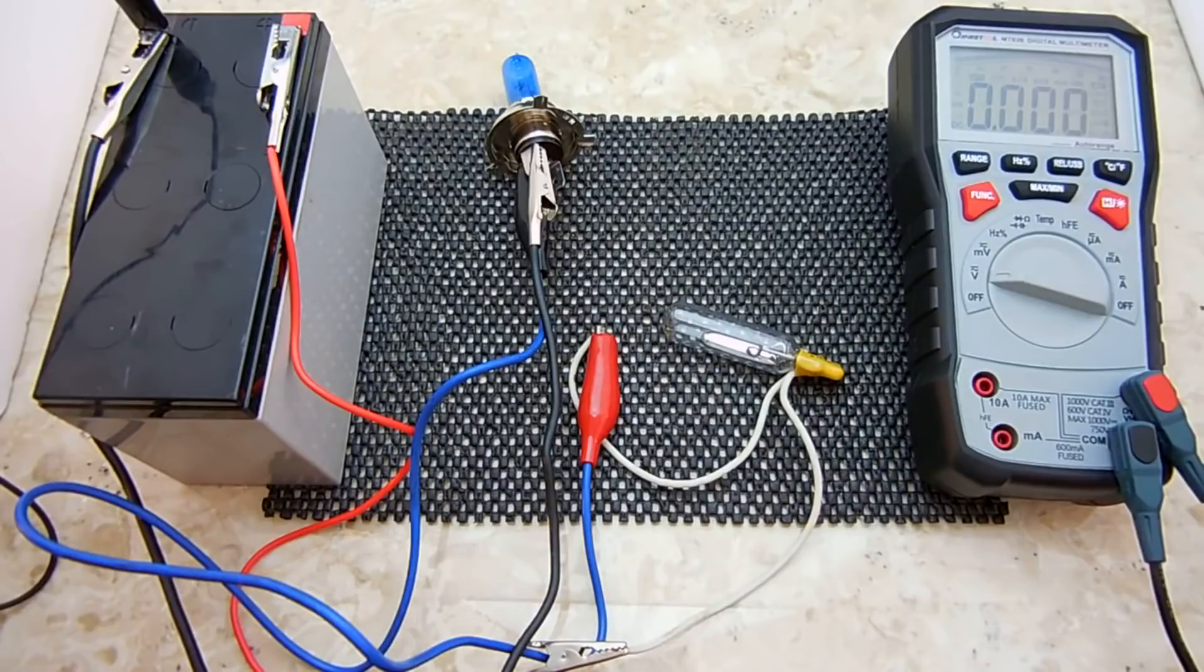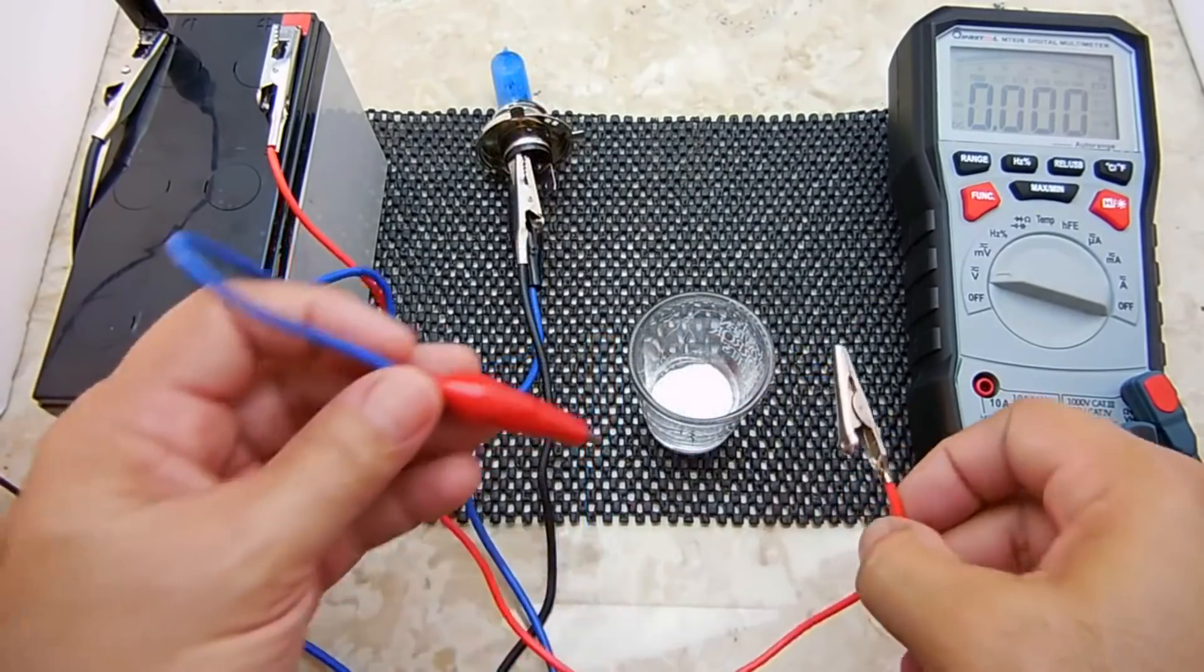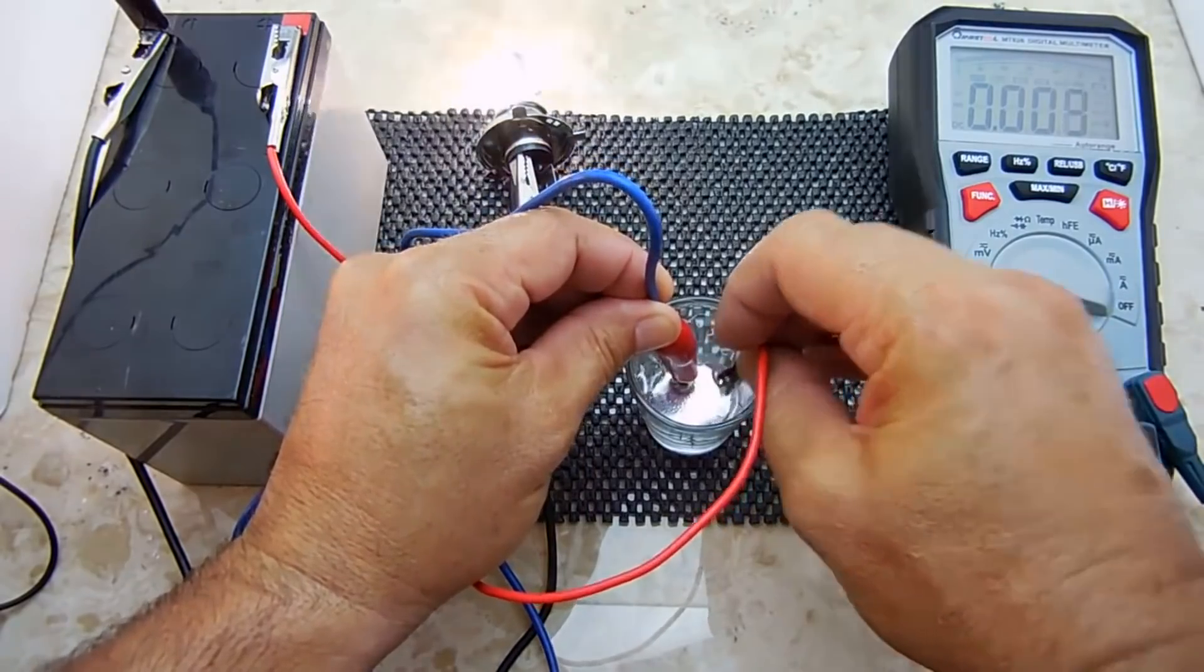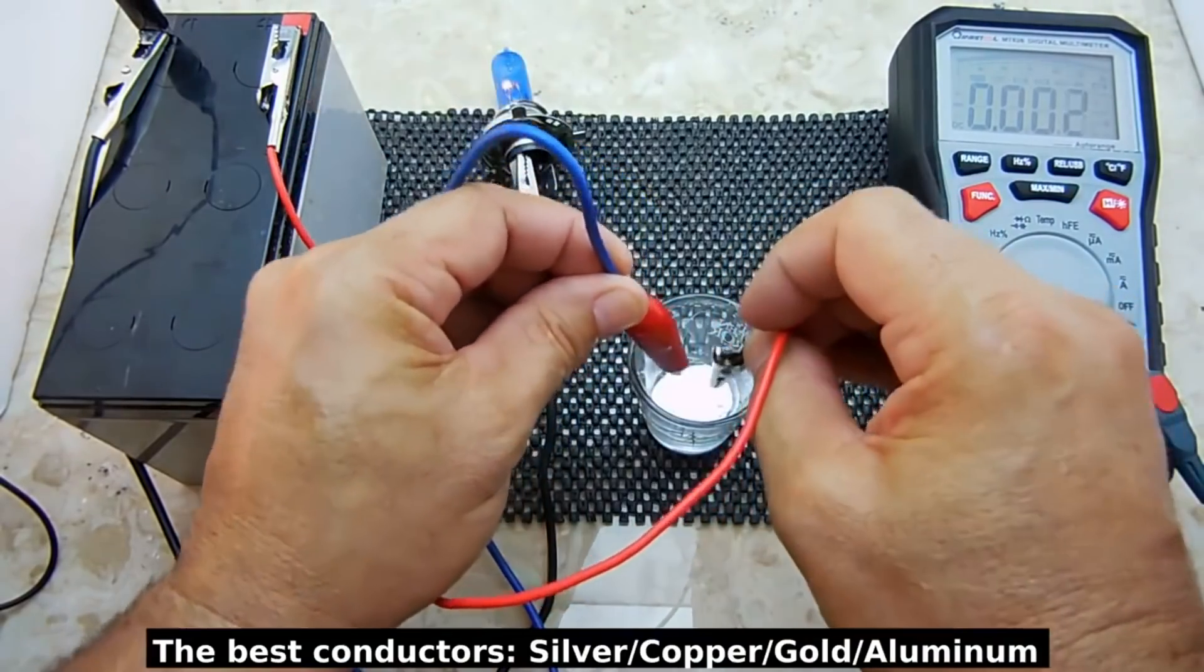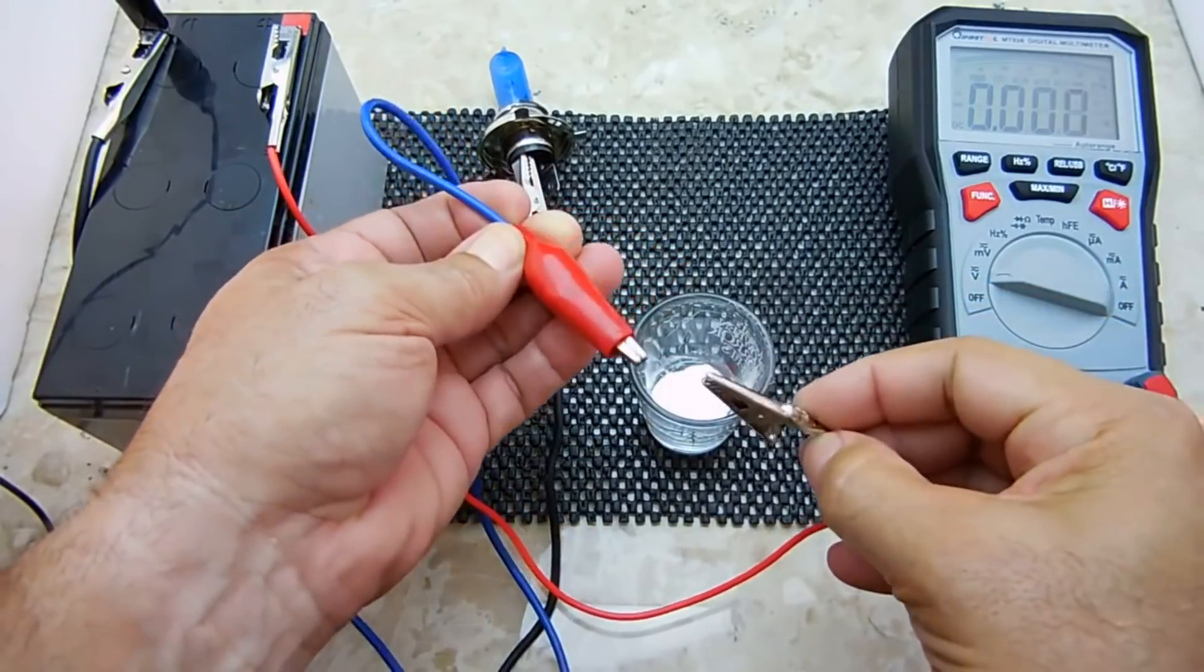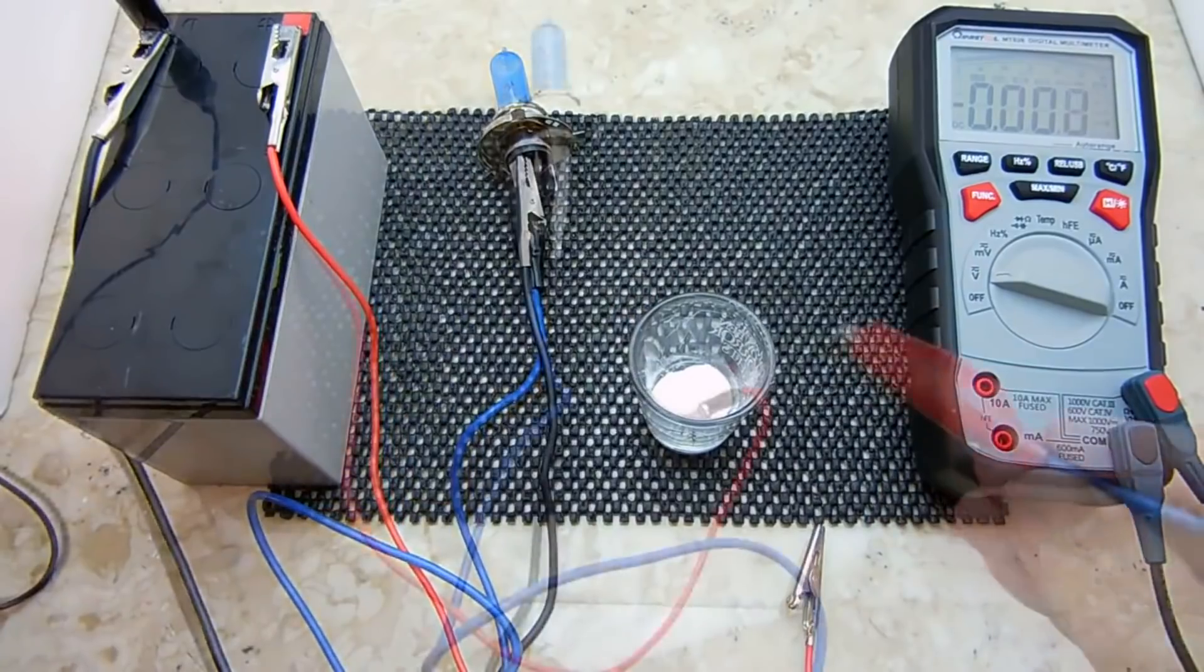Now I'm going to repeat the test using the gallium. Take the alligator clips, submerge it into the gallium about an eighth of an inch deep, keeping them around three sixteenths of an inch apart. Before I do that, let's just do a quick test. Okay, here we go.